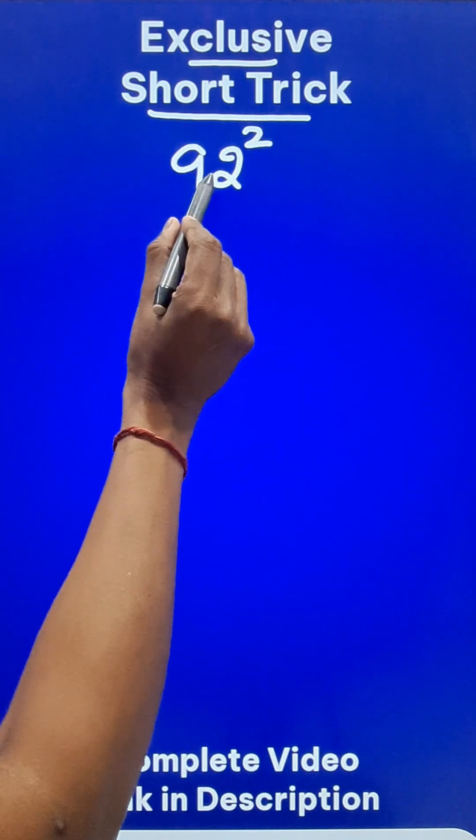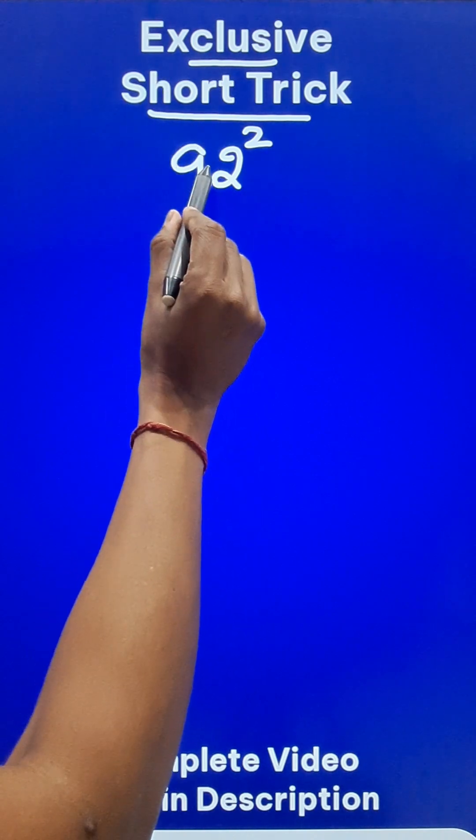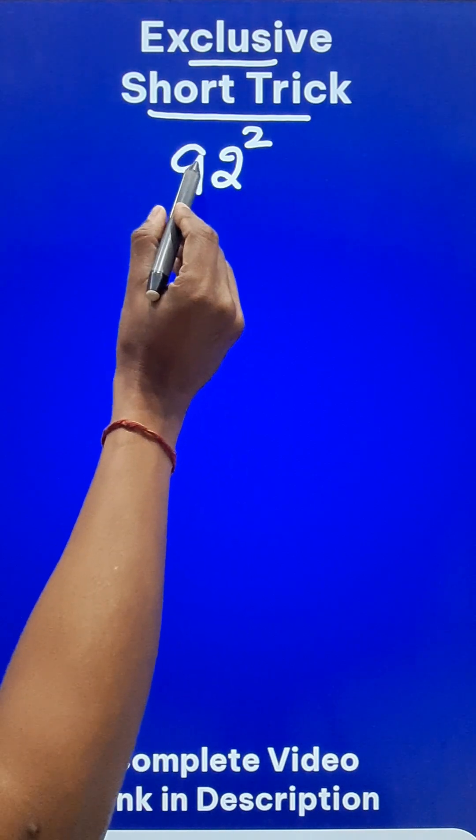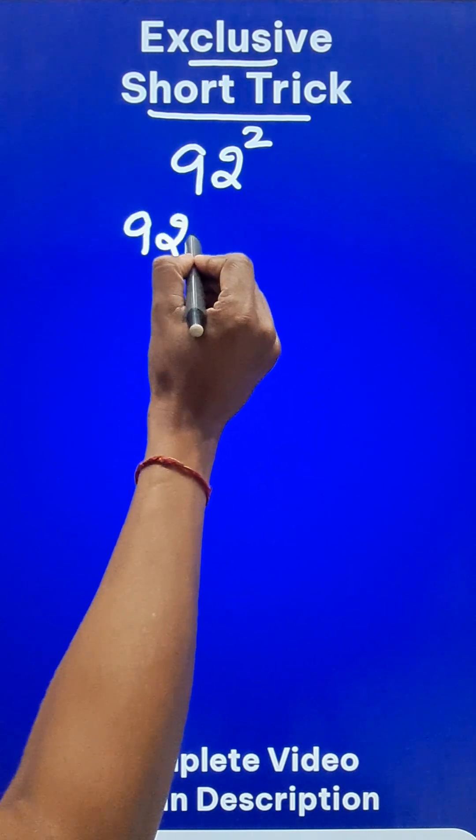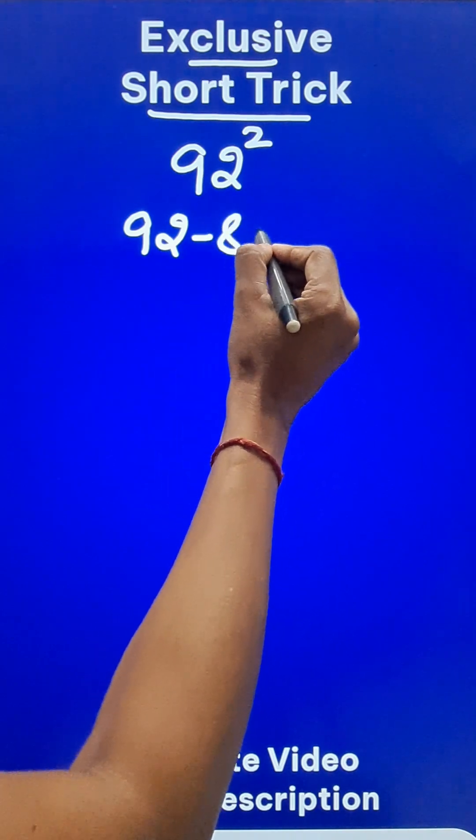So 100 minus 92 gives you 8, and that deficit of 8 is to be subtracted from 92. So what do you get? You get 84.